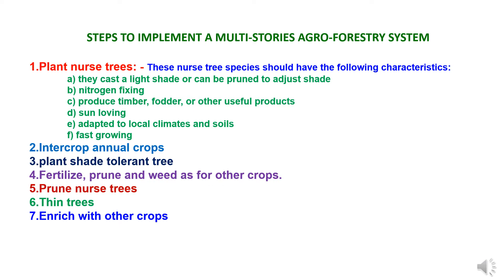Step four: fertilizer application, fertilizer management, pruning of trees and weed control as for other crops. Step five: prune nursed trees. When nursed trees provide too much shade, go for pruning — cutting branches and using the leaves as mulch. Step six: thinning of trees. Watch for adjacent trees with canopies starting to grow into each other, and watch for sun-loving trees — make space for healthy or higher-value trees. Be careful not to damage other trees when cutting, as remaining trees will grow faster. Step seven: enrich with other crops. Plant shade-tolerant crops for food and cash income.